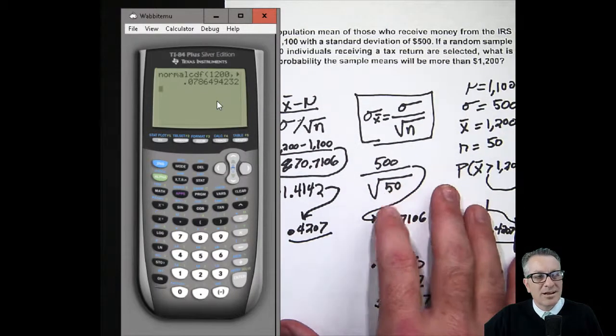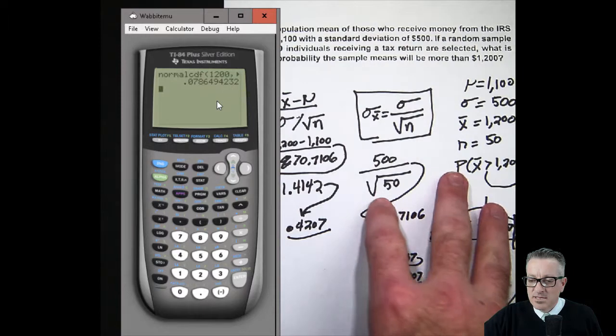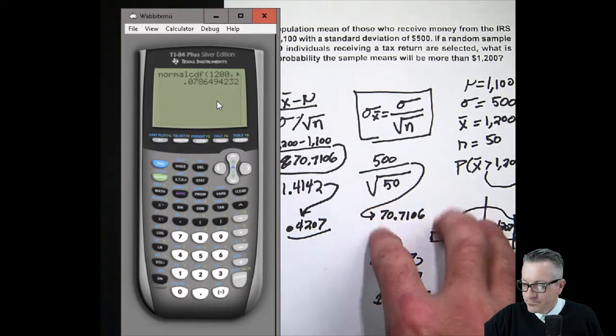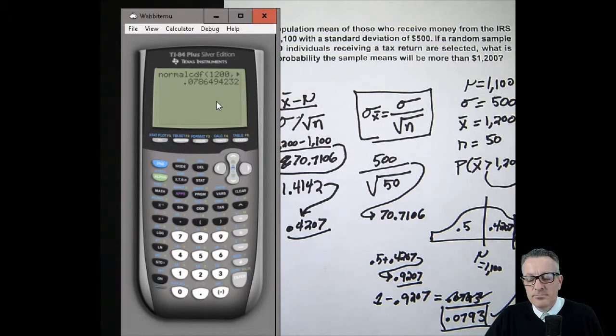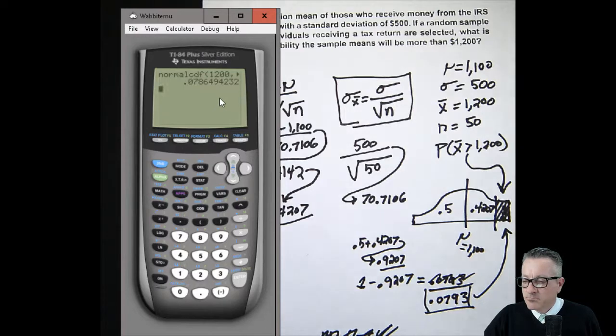The calculator is always more accurate than we are because when we use the tables, they don't go out as accurate as the calculator. I hope you learned a little bit about sampling means with continuous probability distributions.